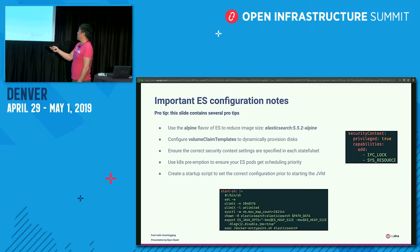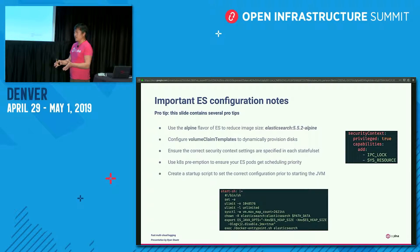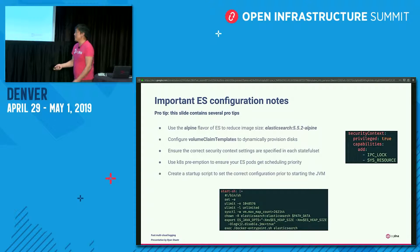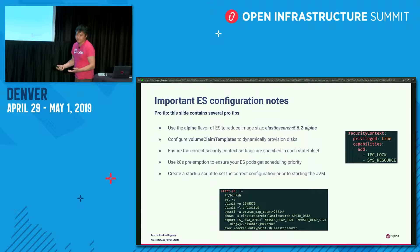Regarding Kubernetes preemption: a lot of times what you run into is a situation where you've got some microservice or set of microservices running inside a pod and they're going to take up a certain amount of space, and you actually need just a sliver more than what's available. Preemption lets you say, 'I am more important than you, therefore I have priority, and I'm actually going to kick you off and put you someplace else.' So that's the idea — you're always assured of a certain amount of resources.